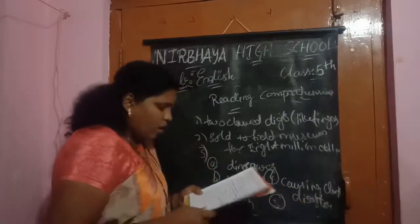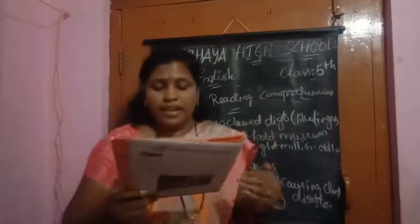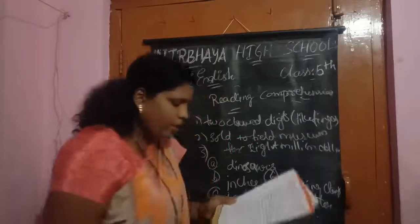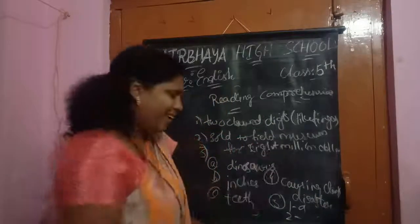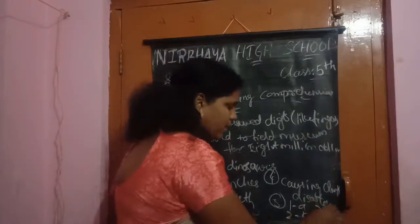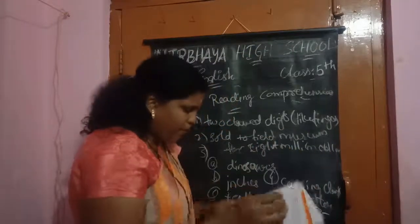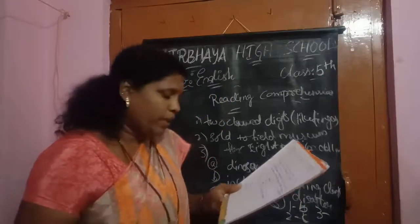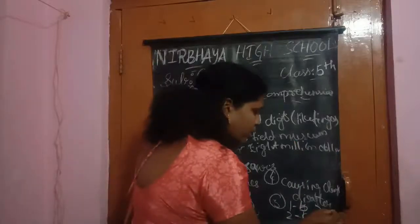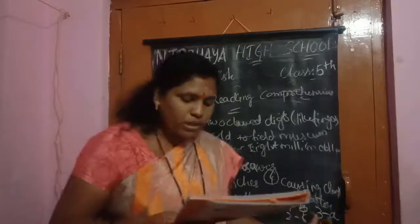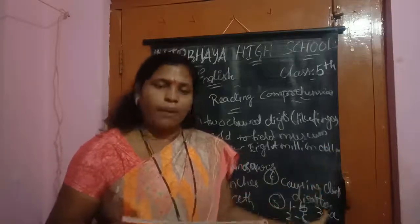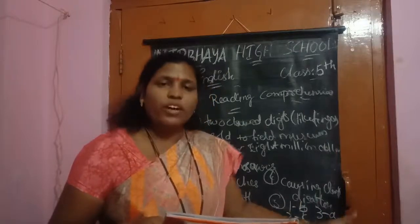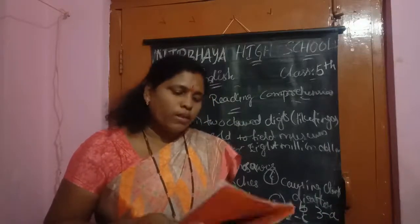Match the words with the correct meaning. First — 'present day' means 'the current period of the time' — goes to B. Second — 'rotting' means 'decaying' — goes to C. Third — 'whopping' means 'very large' — goes to A. Check out the next page, 14th page number.